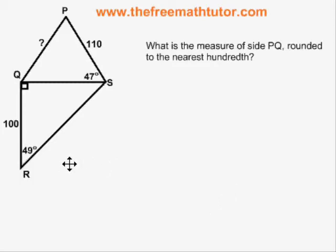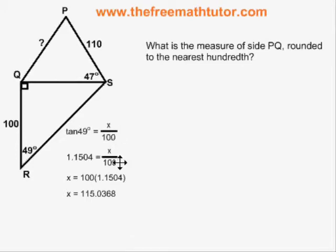This is a TOA situation. We can do tan of 49 degrees is equal to opposite x over adjacent 100. And it will look like this. Once we fill in our TOA formula and solve, we end up with side QS being 115.0368 units in length if we round off to four decimal places.